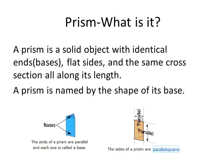A prism is named by the shape of its base. So pictured here, we have a prism, and the bases of the prism are triangles. The ends of a prism are parallel, so the two triangles would be parallel, and each one is called a base.